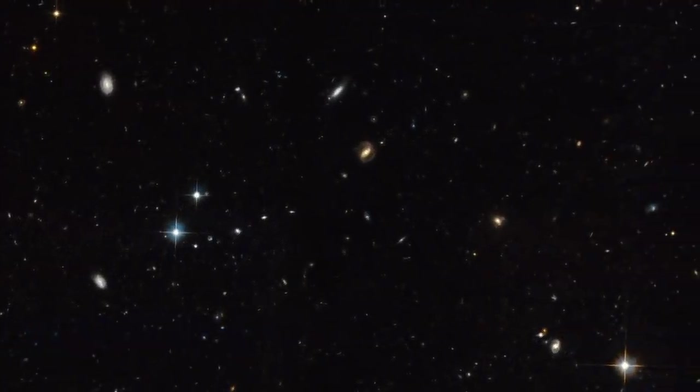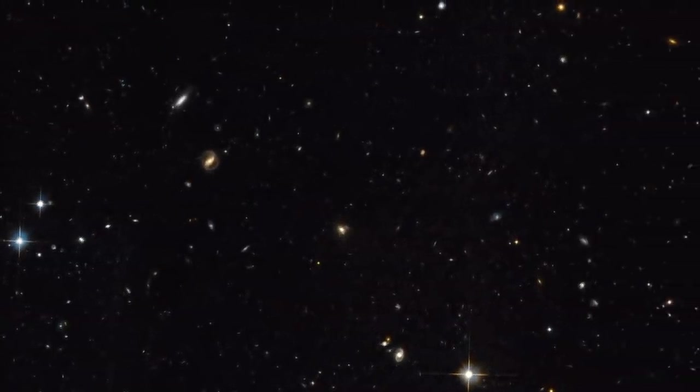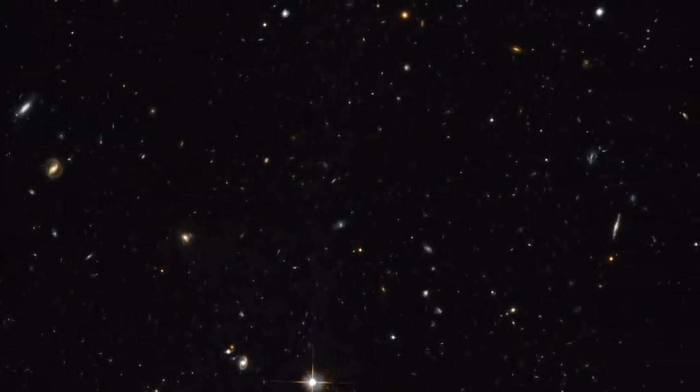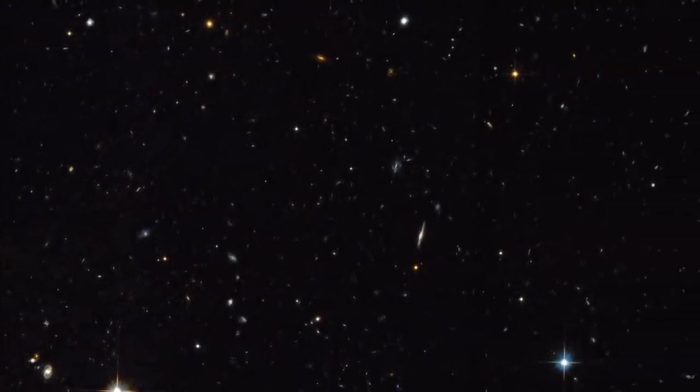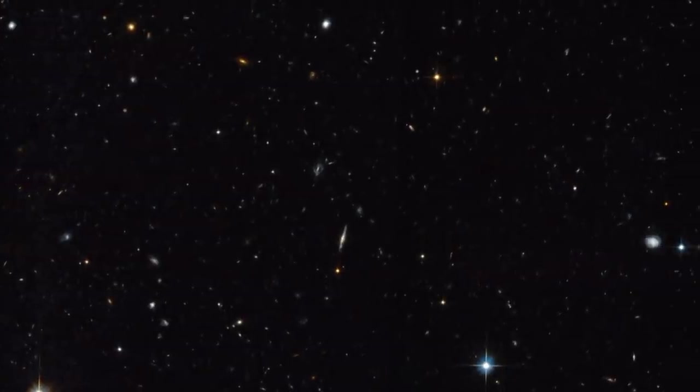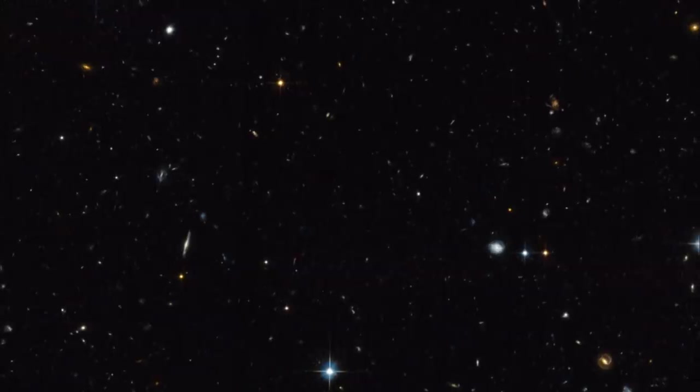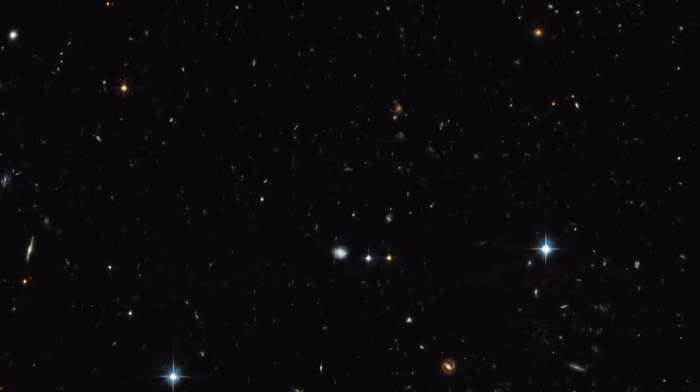But to capture even this small a slice of the universe, Hubble had to take more than 500 separate images using a variety of different filters. Ultimately, all of this information was assembled into one giant mural, a cosmic group photo that includes at least 50,000 individual galaxies.